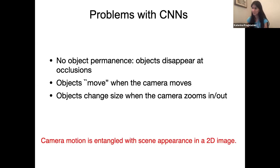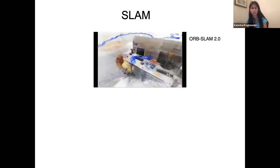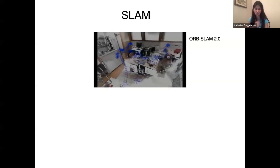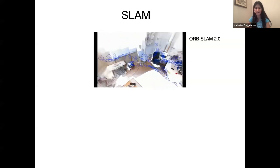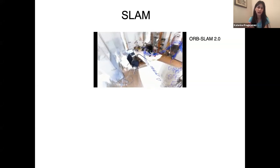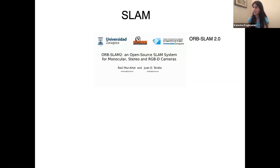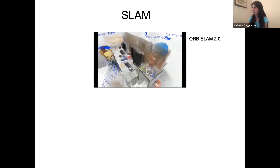We often don't talk about this entanglement problem because we care about static image understanding. The biggest successes since 2012, and even before with DPMs, were on static image recognition — recognizing objects in photographs that humans have taken. You're going to see a nice shoe, contextualized and easy to recognize. But robotics people hunting mobile agents have spent 30-40 years on SLAM — simultaneous localization and mapping methods. Here is a video from ORB-SLAM 2, one of the state-of-the-art methods.